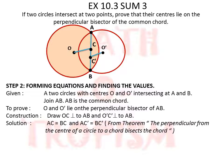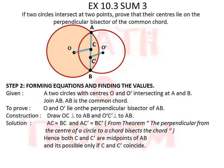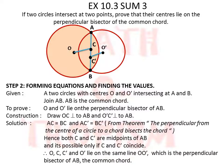The theorem used is: the perpendicular from the center of a circle to a chord bisects the chord. So both C and C' are the midpoints of AB, and this can happen only if C and C' coincide. Therefore O, C, C', and O' all lie on the same line, and since this line is already perpendicular to AB, it is the perpendicular bisector of the common chord AB. Thus proven.